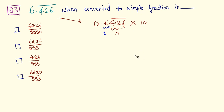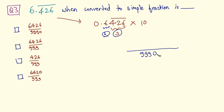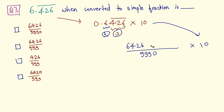We will first find out the denominator. We have 3 recurring digits, so we will have 3 nines. And there is only 1 non-recurring digit, so we will have only 1 zero. This denominator is 9990 — that is 999 × 10. In the numerator, we write the number without the decimal point: 6426. Then subtract the non-recurring digit, which is 6. So minus 6.